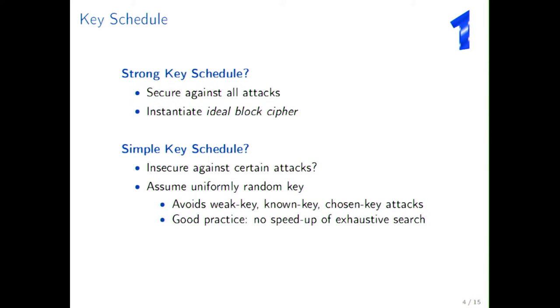Like, for example, typically when you're going to use a block cipher, you will use a uniformly random key to key the block cipher. In such a case, you're going to avoid attacks based on weak keys or known keys or chosen keys. And basically, choosing a key uniformly at random is good practice anyway, because otherwise you would be speeding up exhaustive search. But then what about related key attacks? Do you want security against these types of attacks or not? That's something that I'm going to investigate further in the slides that follow.